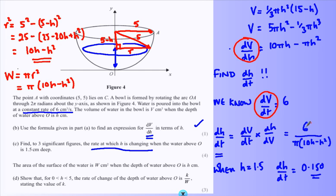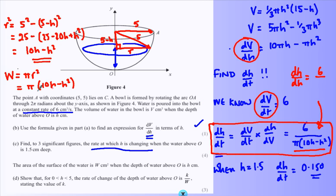If we look back at this formula here, what you'll see is that dh/dt is 6 over π(10h - h²). So in fact, what I can see here is that dh/dt = 6/W. It's my W formula I can see there. So my rate of change of depth of water is indeed something over W, and that something is 6. And there we go. Finished.